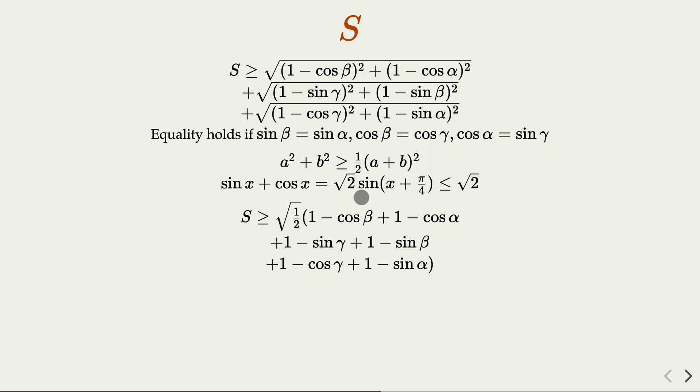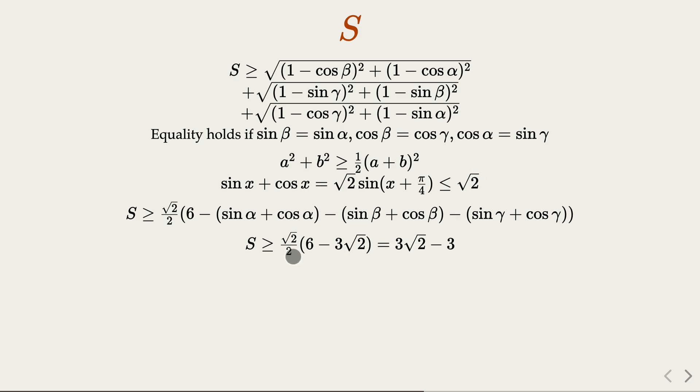So in other words, we continue with the inequality here. This is the square root of one half. Everything square root goes away, so it simply becomes the summation of the two terms. And sine alpha cosine alpha is bounded by square root of 2. Same thing for beta, same thing for gamma. Now, is this equality achievable? The answer is yes. The condition has to hold a has to equal to b. So what we get is when alpha beta gamma equal pi over 4, all the equality condition holds. And S would equal to this minimum value here, 3 square root of 2 minus 3.